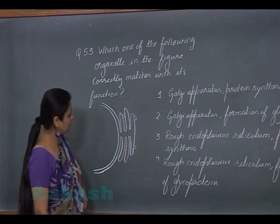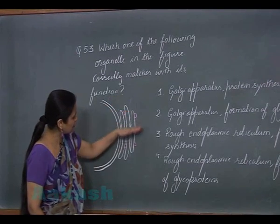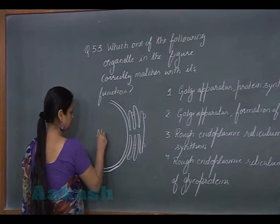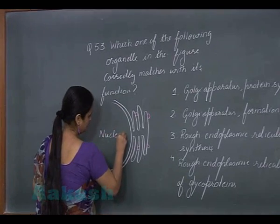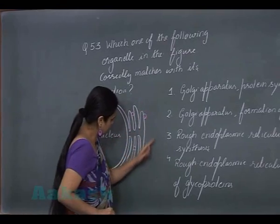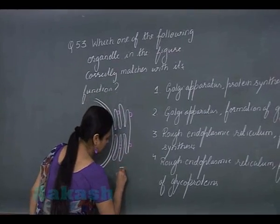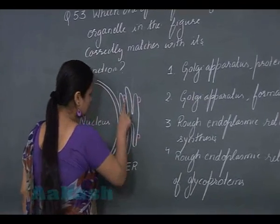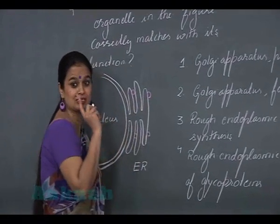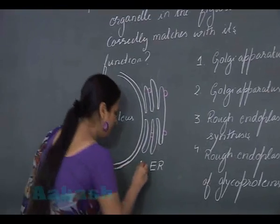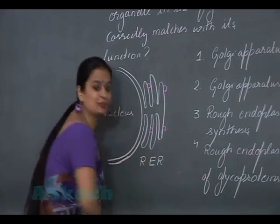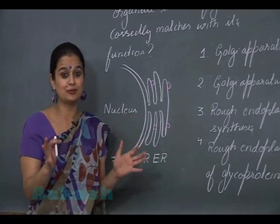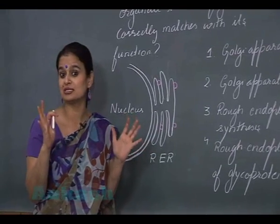In question 53, we have to identify the function of this organelle. The part shown here is the nucleus, and the structure attached to the nucleus is the endoplasmic reticulum. The granular structures visible over the endoplasmic reticulum are ribosomes, so this is rough endoplasmic reticulum. Ribosomes are involved in protein synthesis — they are protein factories.